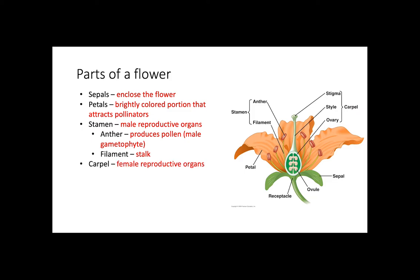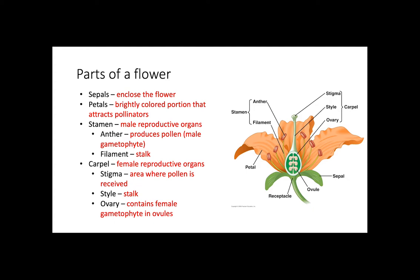The carpel includes the female reproductive organs. The stigma is the area where pollen is received, the style, or the stalk, and the ovary, which contains the female gametophyte and ovules. When these ovules are fertilized, they develop into seeds.